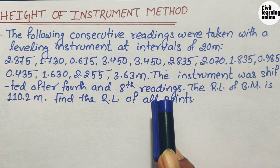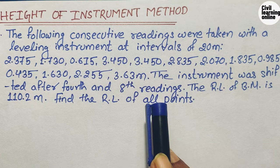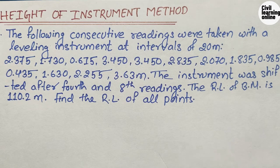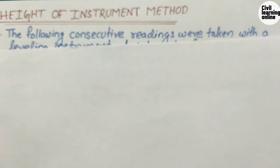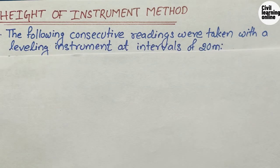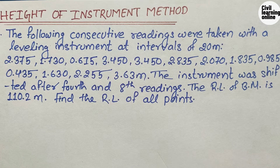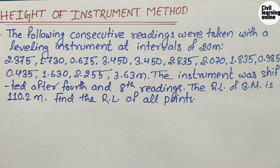We are asked to find the reduced level of all the points using the height of instrument method. While solving this numerical, we need the RL of any one point to proceed. It does not matter whether you have attended a numerical based on the height of instrument method or rise and fall method — from this single video you will be able to clear all your concepts. For rise and fall method concepts, check my other video whose link is in the description.